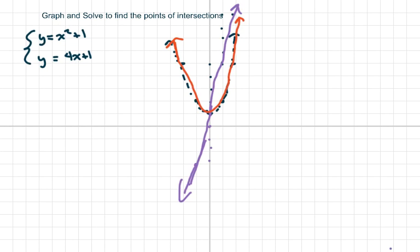Hi, everyone. We're going to graph and solve to find points of intersection. We have a quadratic equation here and a linear equation here.